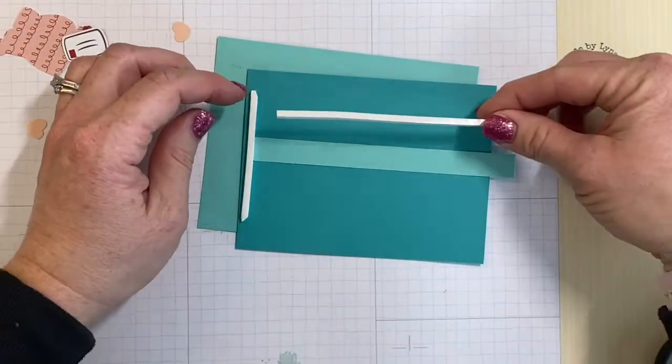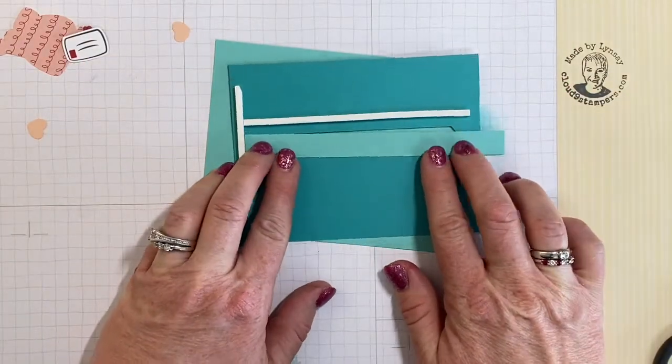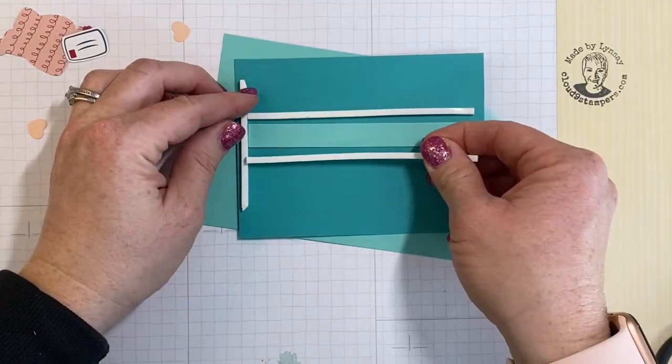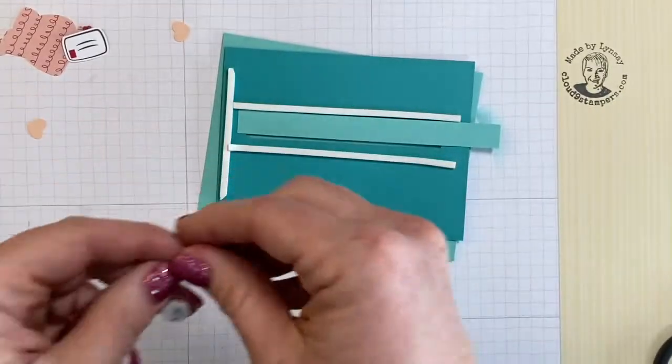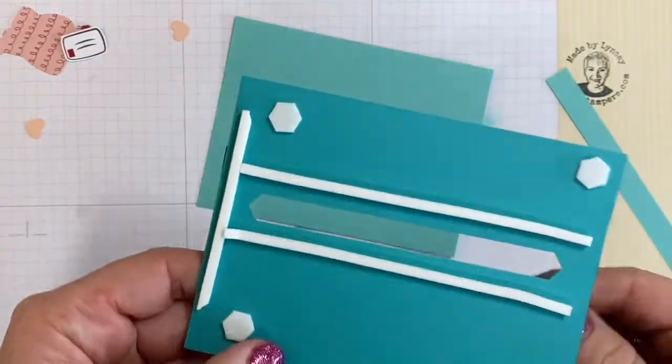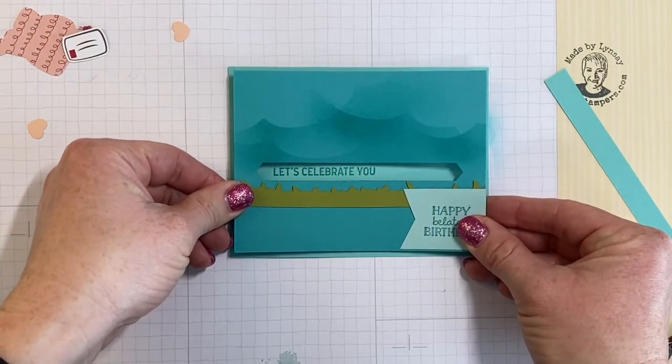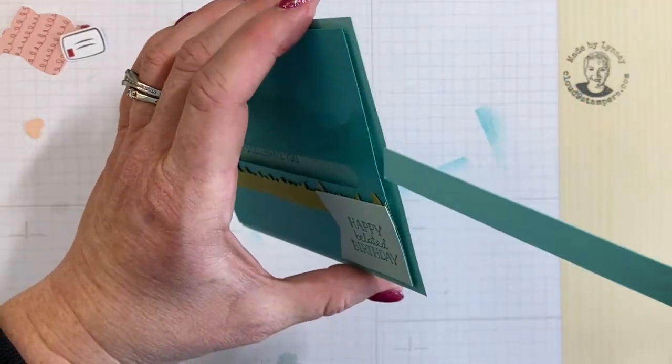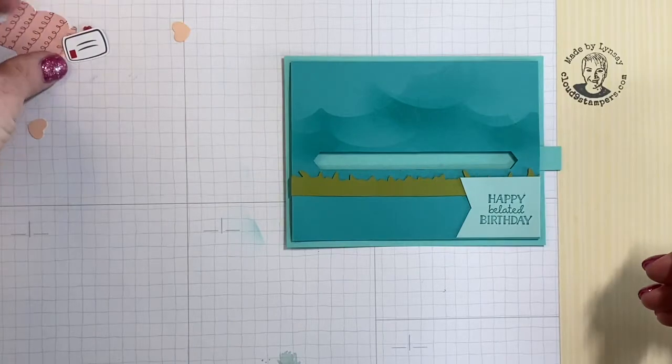You want it close but not too close because you don't want the pull tab to wiggle too much, but you also don't want it to catch the strip. Then same thing on the other side. Then you can use just regular dimensionals or more foam adhesive strips to add a little bit of dimension to the top. I've got all the backings pulled off and now we're going to flip this over and line it up with our greeting and stick it on like that. You've got a little channel that you've prepared and that's going to, this strip now is going to go inside the channel like that. You just want it to be centered.